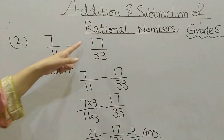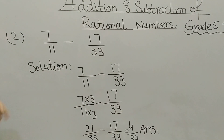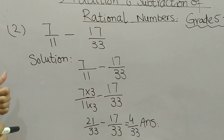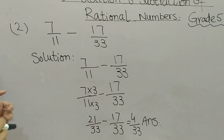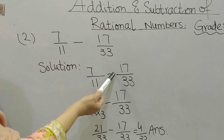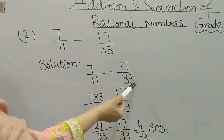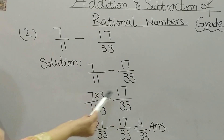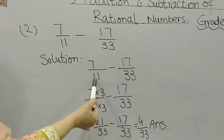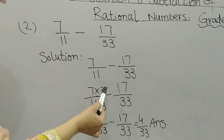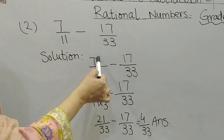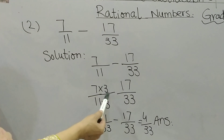Now let me do a subtraction sum. Here is another question: 7 by 11 minus 17 by 33. As mentioned earlier, before doing addition or subtraction of fractions we have to make the denominators the same. Since 33 is divisible by 11, I multiply 11 by 3 to get 33, and in the same way I multiply 7 by 3.